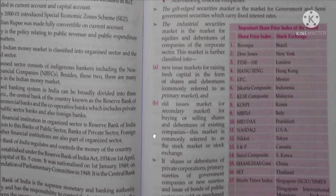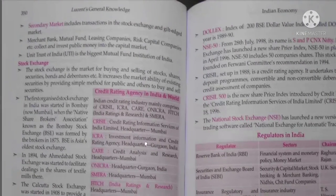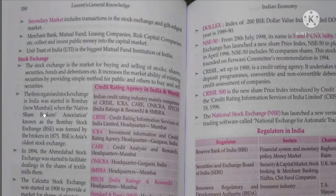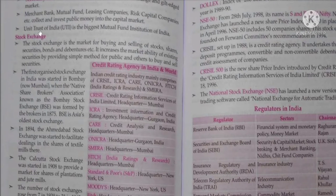The secondary market, also called the old issues market, is for buying or selling shares and debentures of existing companies, commonly referred to as the stock market or stock exchange. If shares or debentures of private corporations, primary securities of government companies, new securities, or bonds of public sector are sold or purchased in the capital market, then that market is called the primary capital market. The secondary market includes transactions in the stock exchange and gilt-edged market. Merchant banks, mutual funds, leasing companies and risk capital companies collect and invest public money into the capital market. The Unit Trust of India is the biggest mutual fund institution of India.